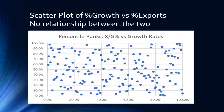Here is a plot of all countries showing the percentile ranks for growth rates versus the percentile rank for exports-to-GDP ratio. As you can see, for every growth percentile — say the 20th percentile in growth — the export rank varies from top to bottom. It is not the case that higher growth rates correspond to higher export rates. This shows that over the entire spectrum, there is simply no relationship between percentile growth rank and percentile export rank.